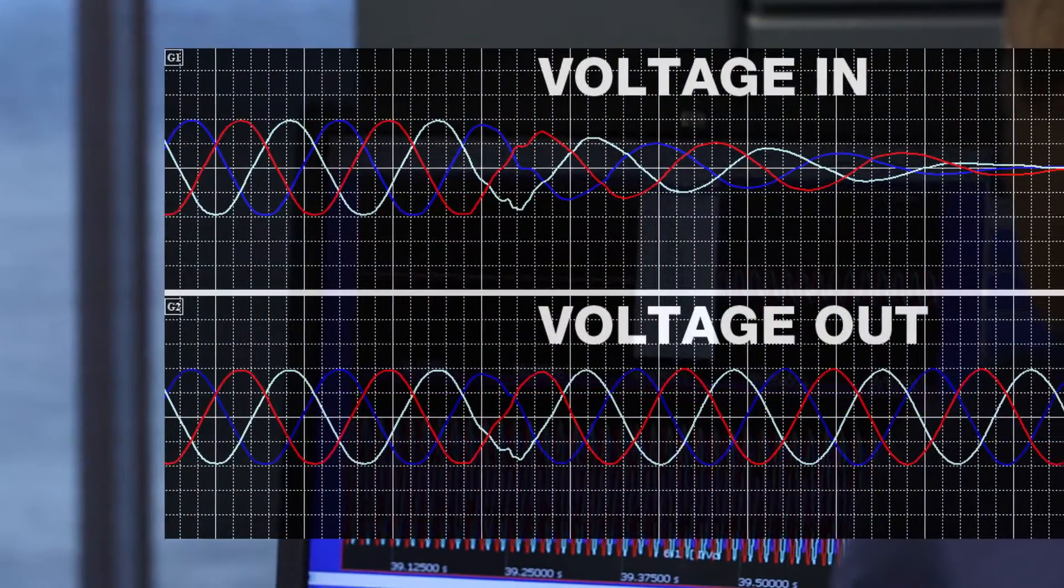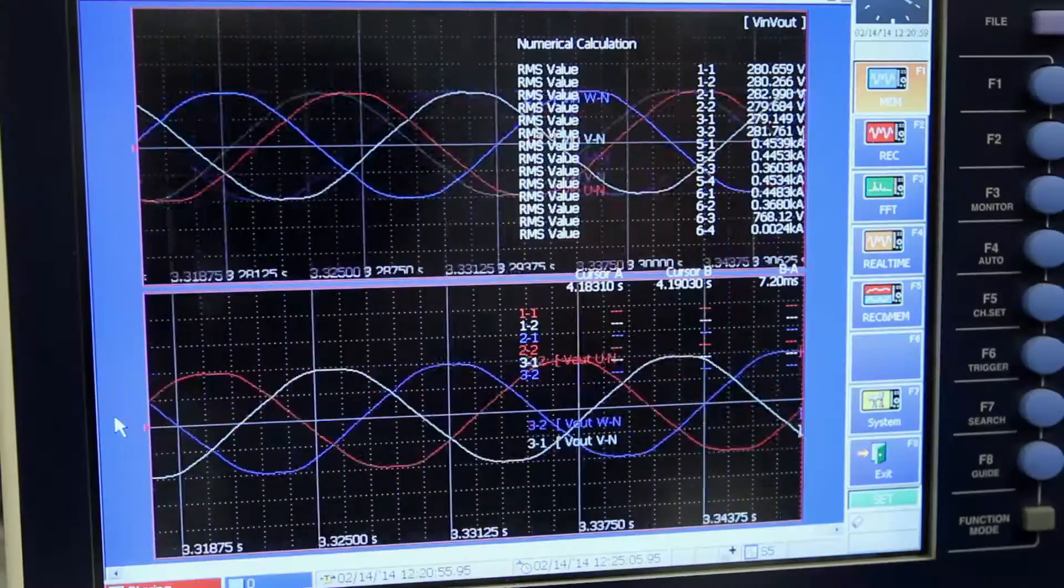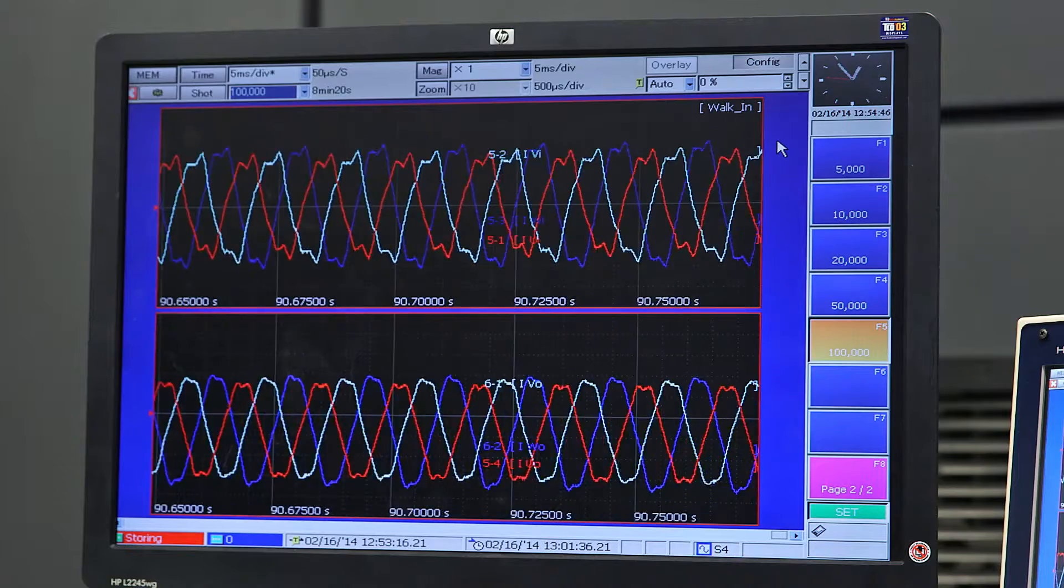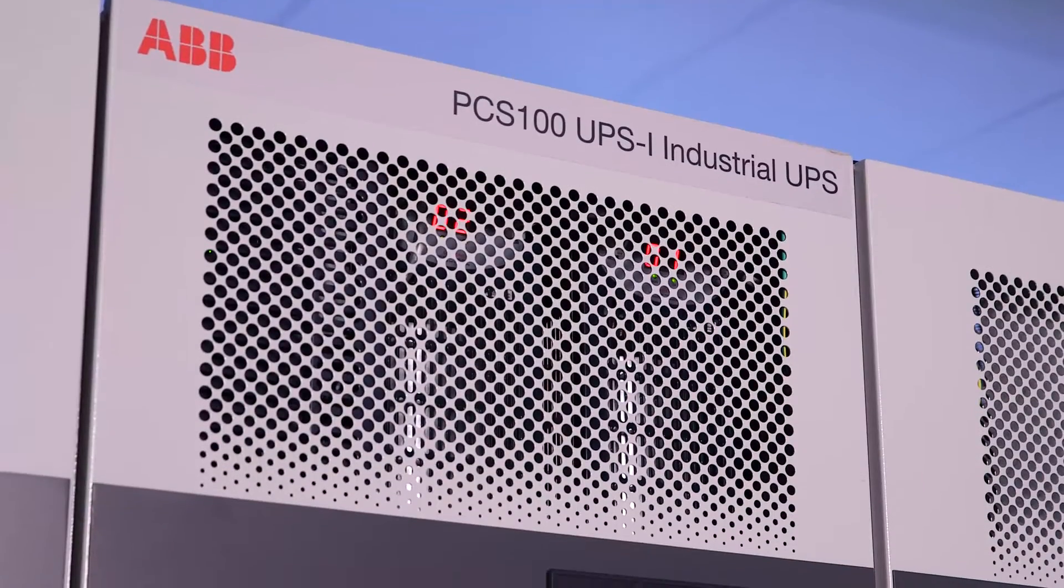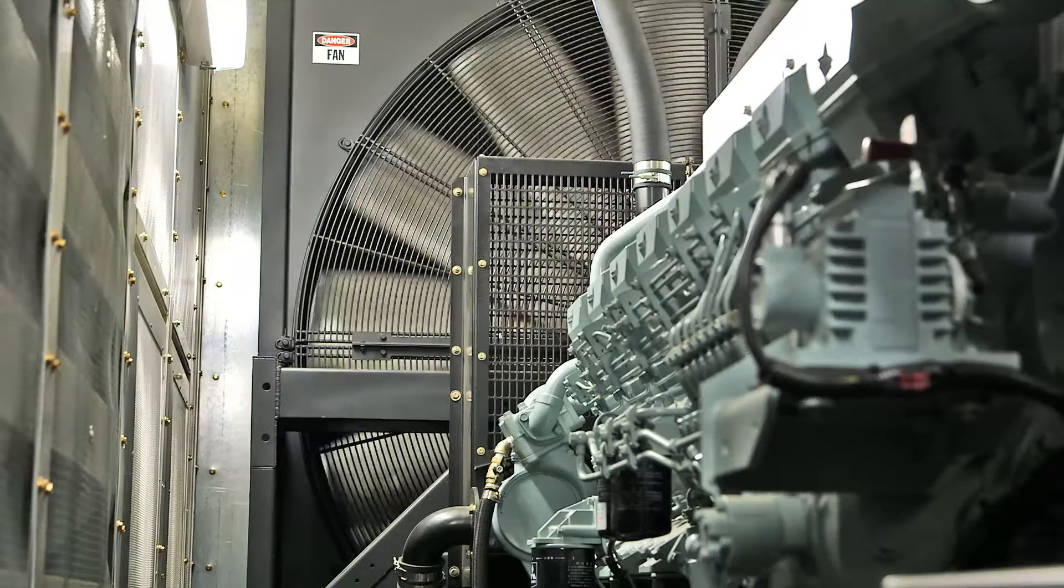Short-duration power quality events such as voltage dips and swells are taken care of by the UPS-I without need for the generator to start. If confronted with an extended event, ABB's PCS100 UPS-I bridges the time between the utility failing and the generator starting.